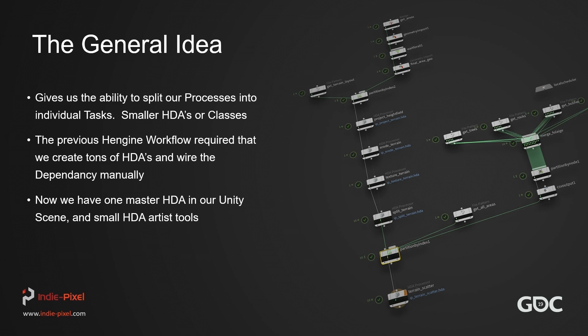By artist tool, I mean — for example, for where the airports are placed — all the artist does is create a simple HDA with a closed curve and feed that into the PDG network. It then clears out the trees, places an airport, flattens the terrain, and blends it in with the erosion for a nice transition. Same with the roads — just a simple curve as a basic road representation, and PDG outputs the final road. Your HDAs are really tiny, which makes them run really, really fast.